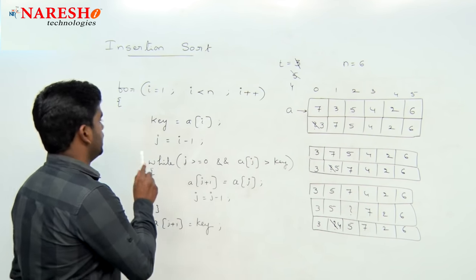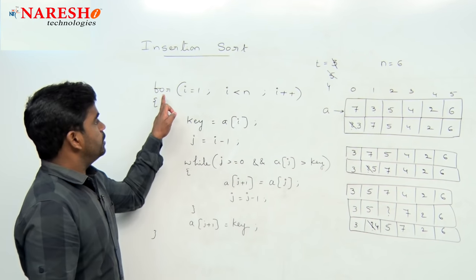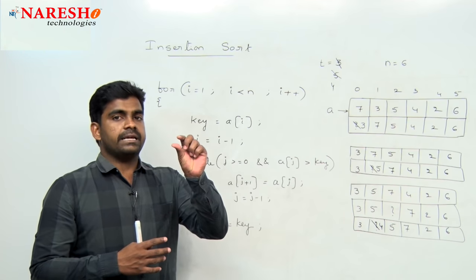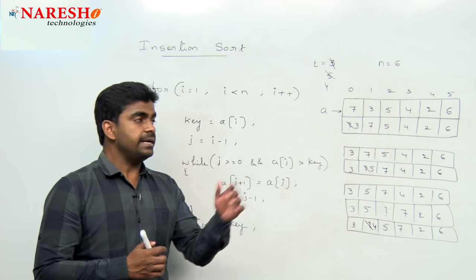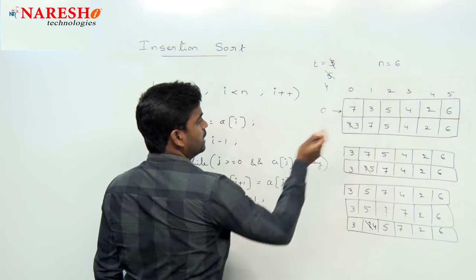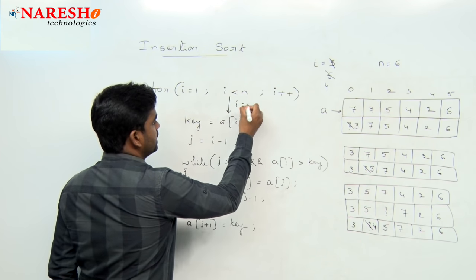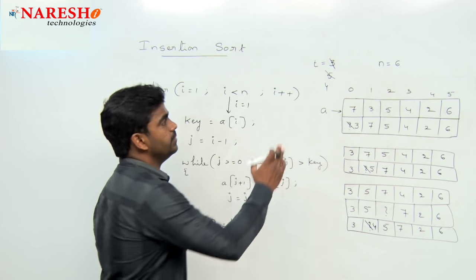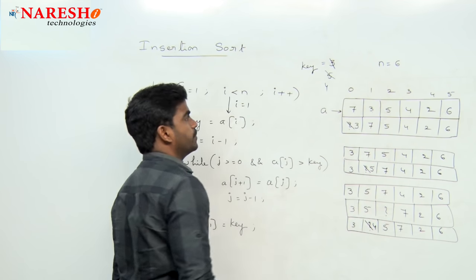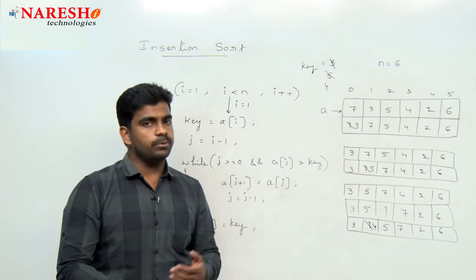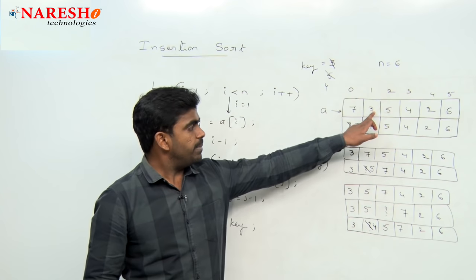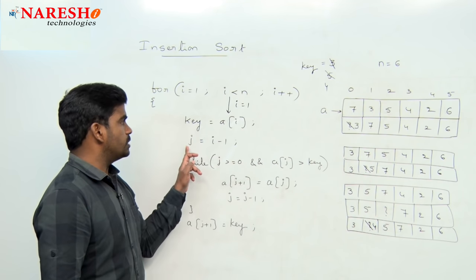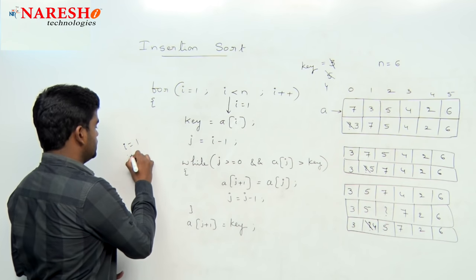Now coming to the logical part. We repeat a for loop where i value starts from 1. Why does it start with 1? Because in the first stage, the element at index 1 is compared with the previous element — here, 3 is compared with 7, so i starts at 1. The value a[i] is stored into a variable called key. The previous element index is i minus 1, so when i is 1, j becomes 0.